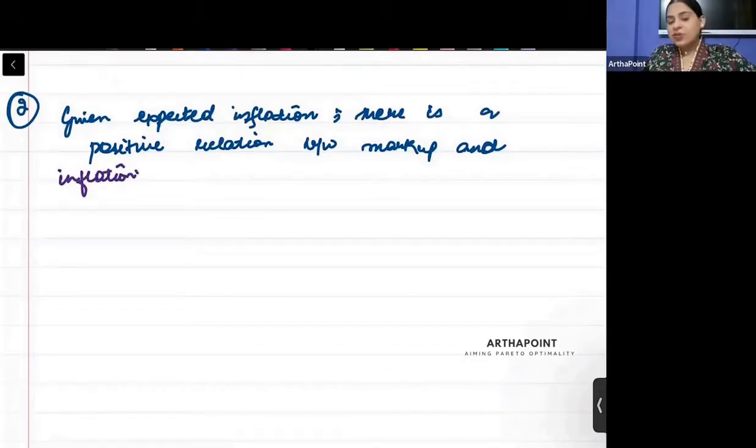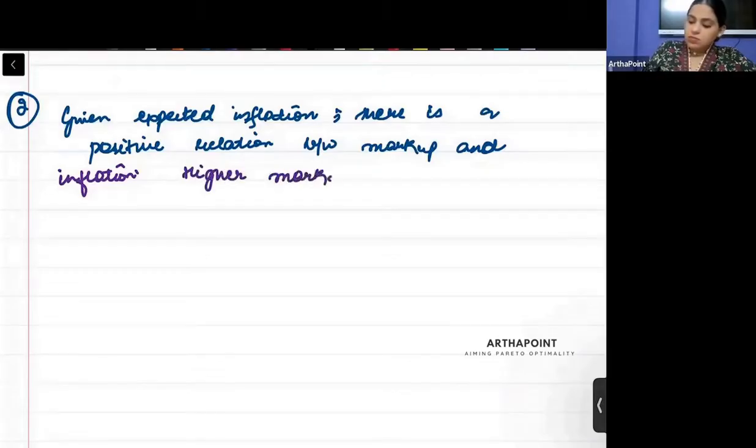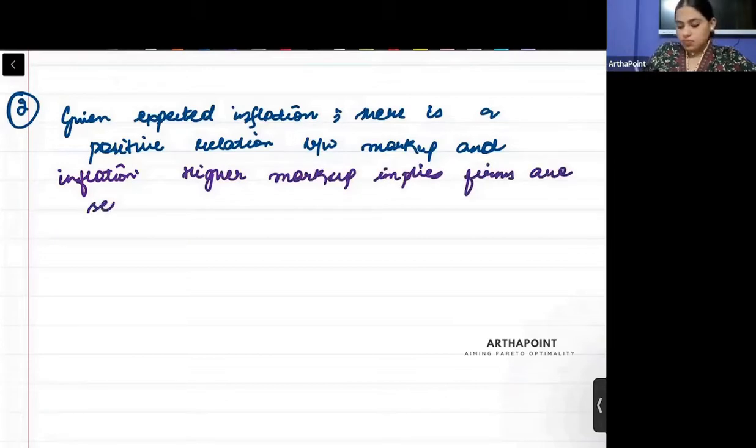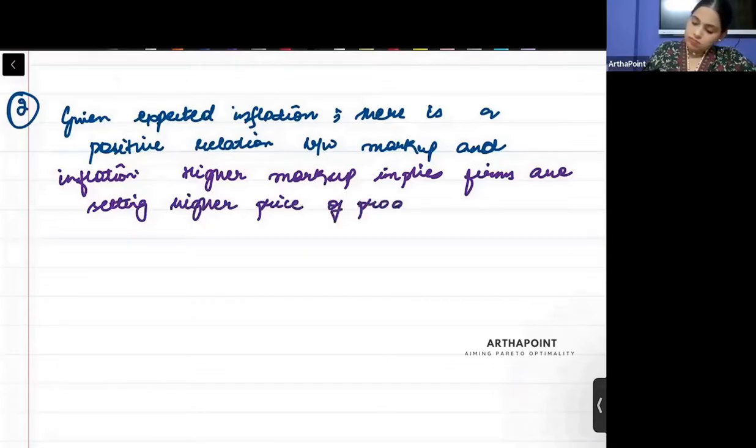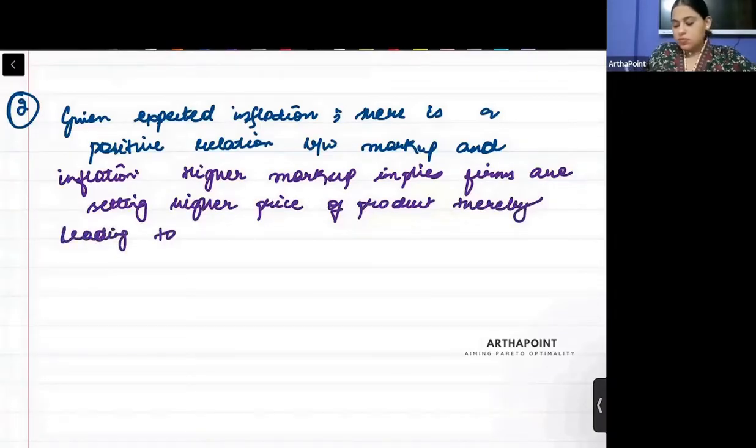So why? Why is that going to happen? Because when markup is more, that means that the firms are charging more profit over and above wage. So more profit means they are setting higher price of the product. So when they set higher price of the product, then automatically inflation will come in the economy. So higher markup implies firms are setting higher price of product, thereby leading to inflation.